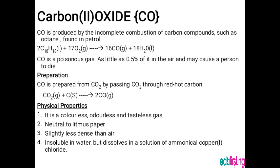Carbon two oxide, CO, is produced by the incomplete combustion of carbon compounds such as octane found in petrol. Note that CO is a very poisonous gas — as little as 0.5 percent of it in the air can cause a person to die. It is released through the exhaust pipes of cars and industries.